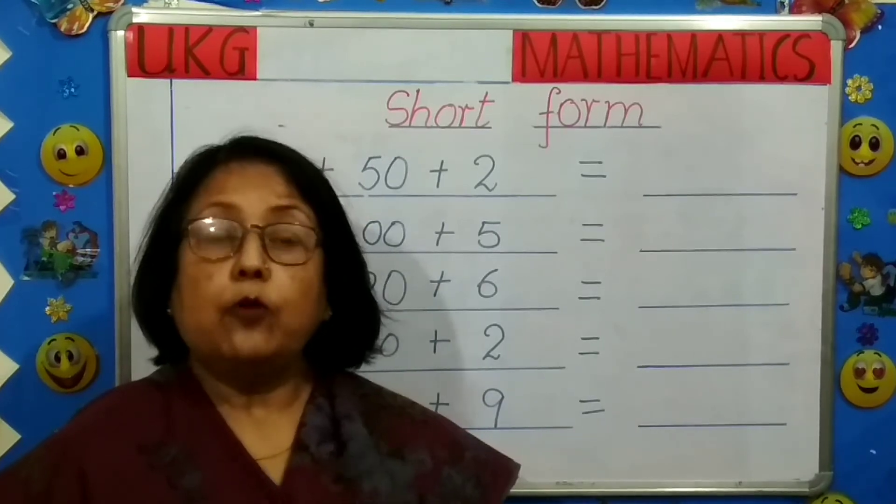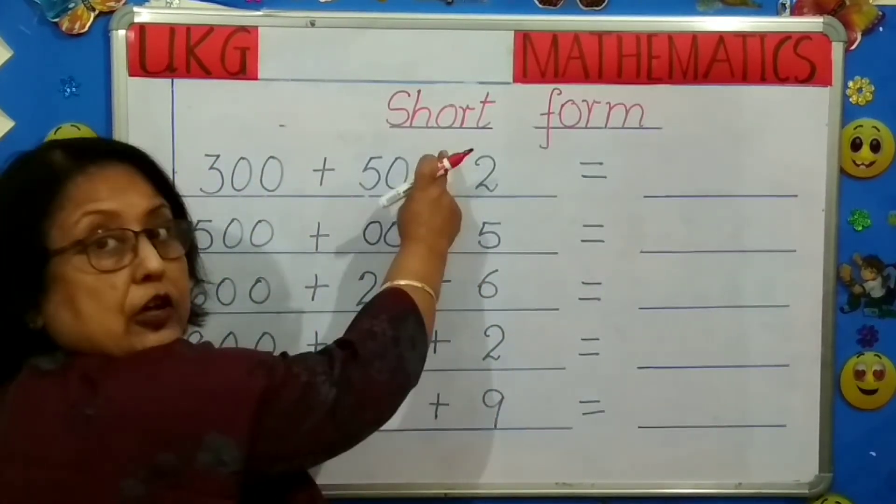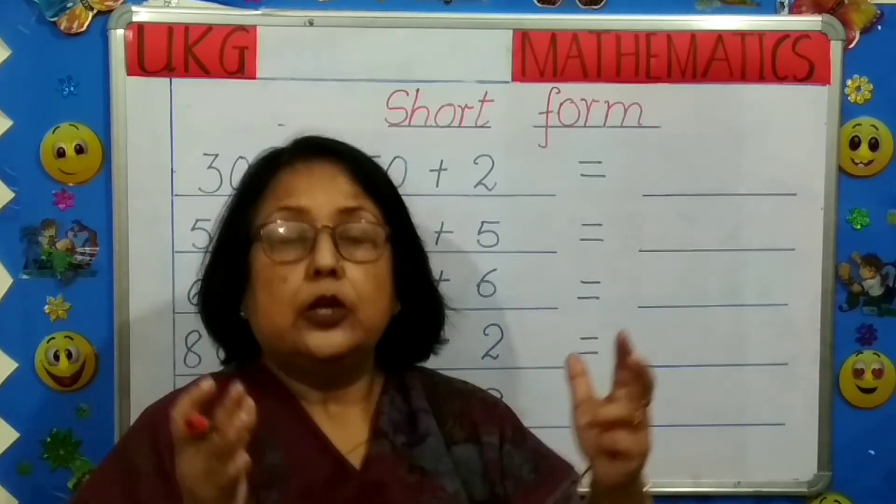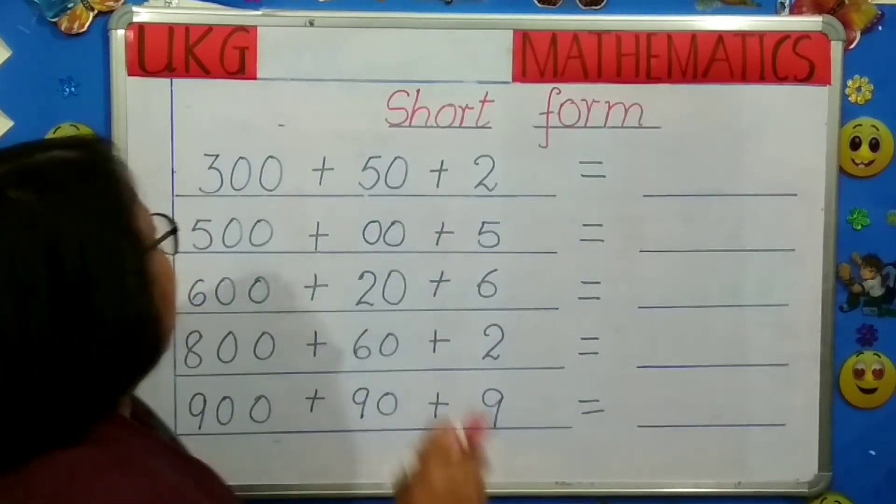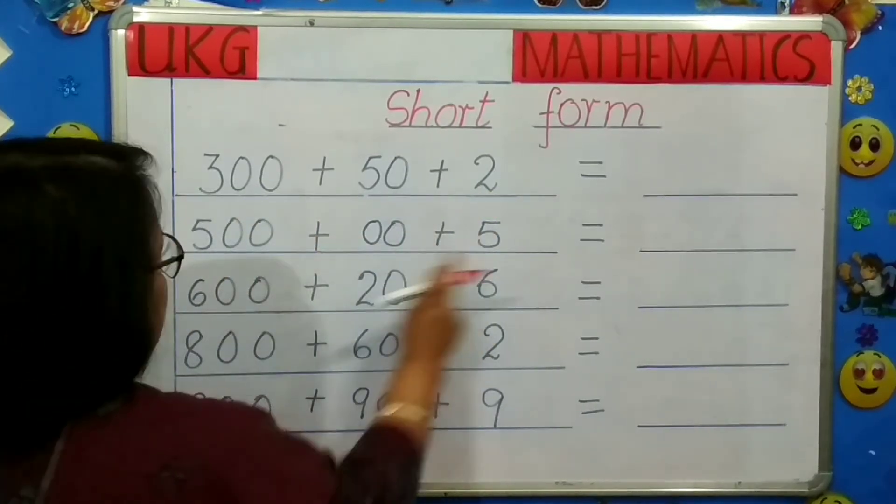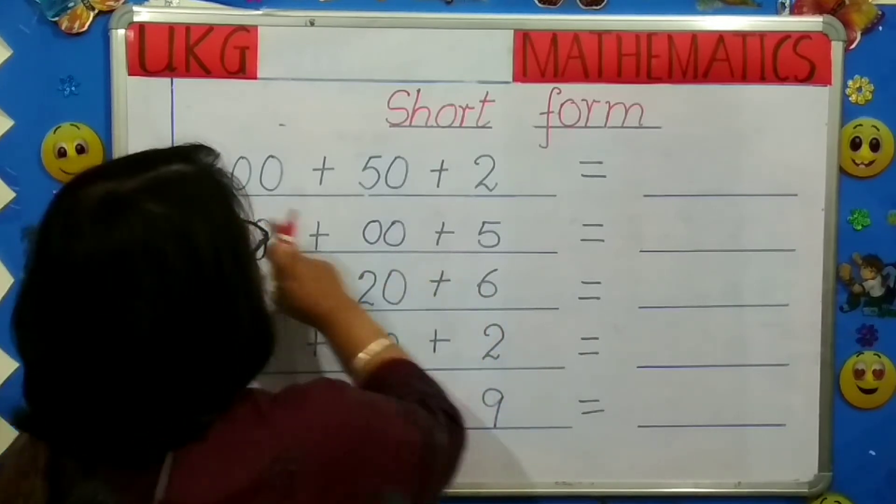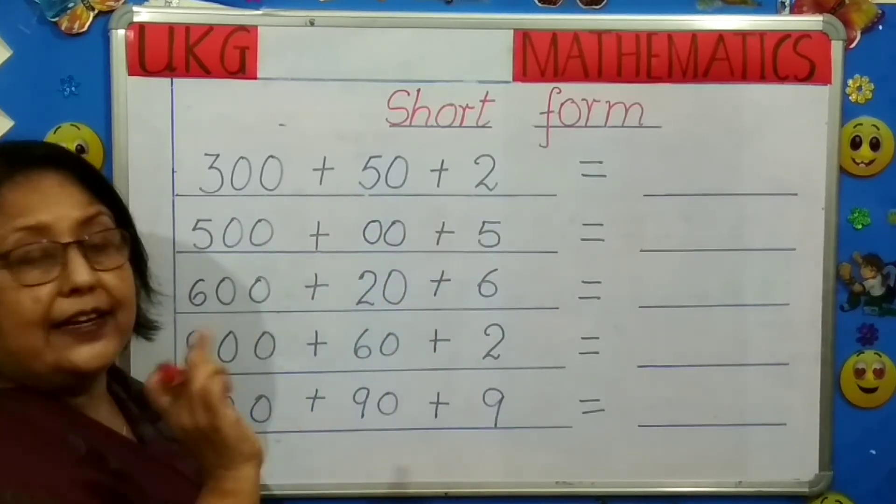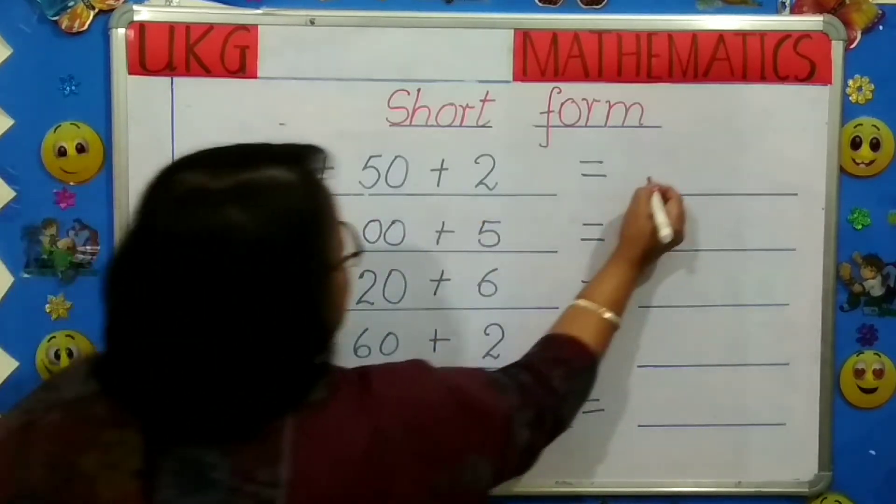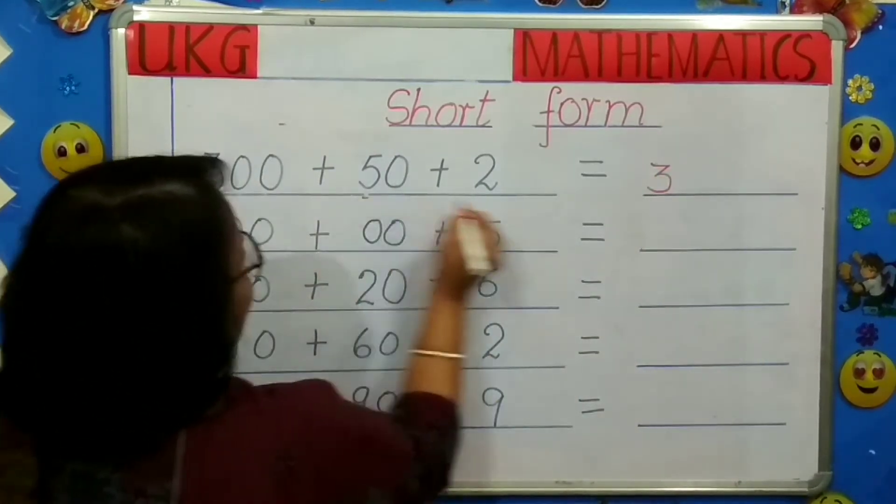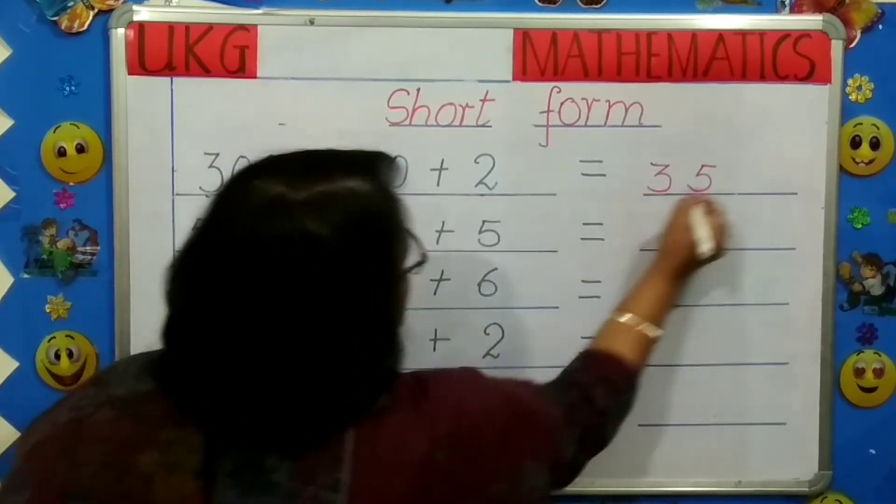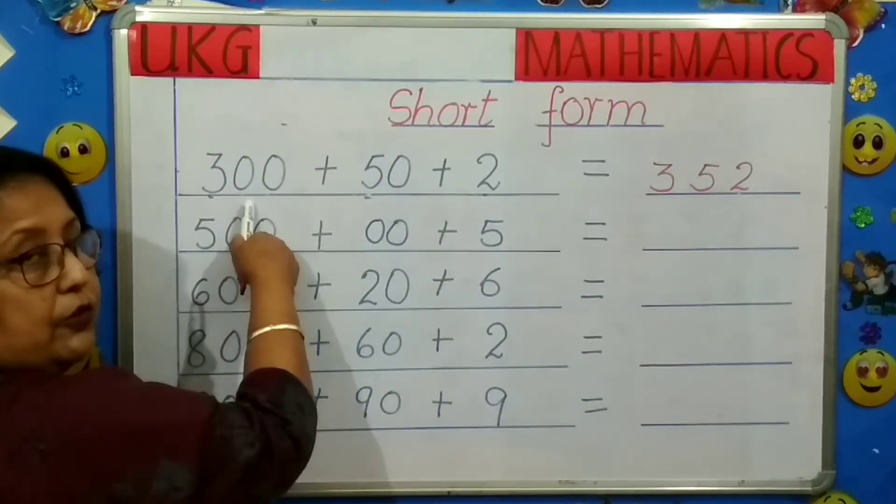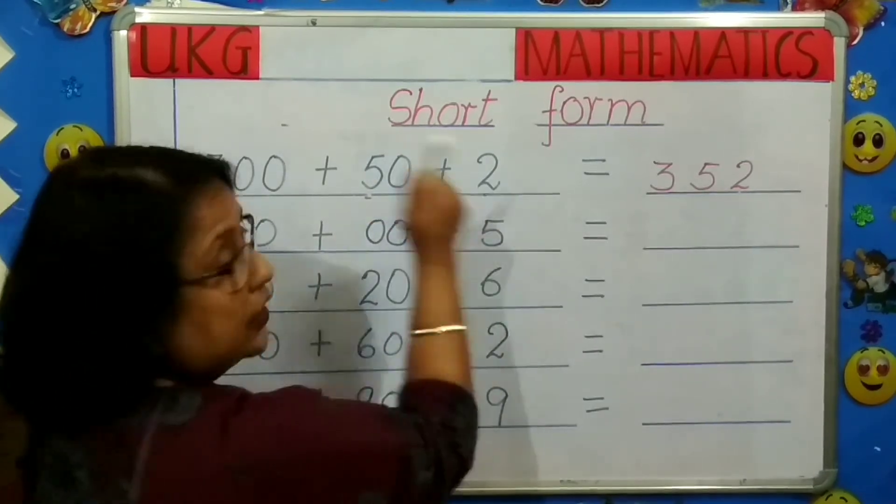So children, now moving on to our next topic. Short form. What is short form? Short form means to make small. Understood? Short form means to make small. Now, you see the numbers are expanded here. Can you see? So, what we have to do? We have to omit the next numbers. Only take the first numbers. And write here. Like example. 3, 5, 2. So, this becomes 352. You are also seeing to just check your answer. 352. Next.